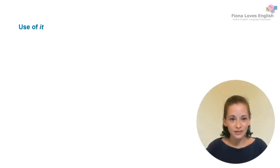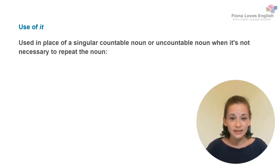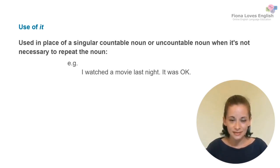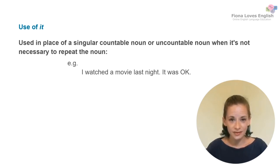So let's have a look at the different uses of 'it.' We can use 'it' in place of a singular countable noun or uncountable nouns when it's not necessary to repeat the noun. Here's an example: 'I watched a movie last night. It was okay.' In the second sentence, 'it' has been used to mean 'the movie,' which we've previously mentioned, so there's no need to repeat the noun. We don't have to say 'The movie was okay' — we can just use the impersonal pronoun 'it.'